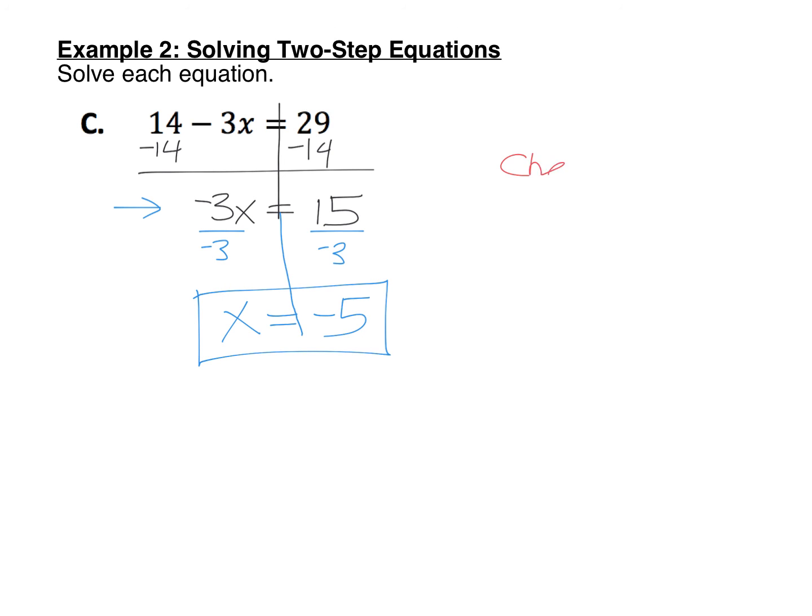Then we can just check the answer quick. Go back to the original equation, replace the x with negative 5. And negative 3 times negative 5 is 15. So 14 plus 15 should be equal to 29. And that does work. Passes our check, which means the answer must be x equal negative 5.